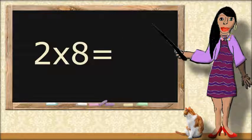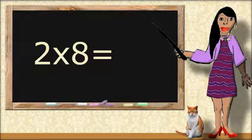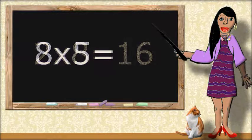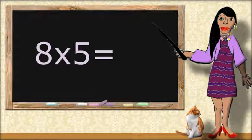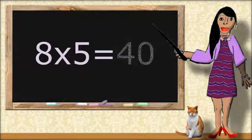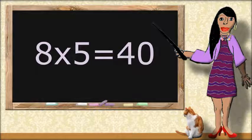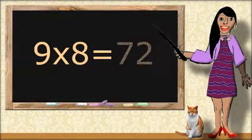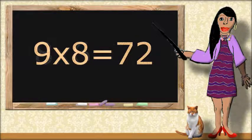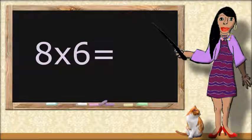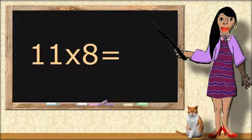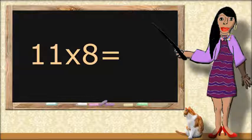2 times 8 equals 16. 8 times 5 equals 40. 9 times 8 equals 72. 8 times 6 equals 48. 11 times 8 equals 88.